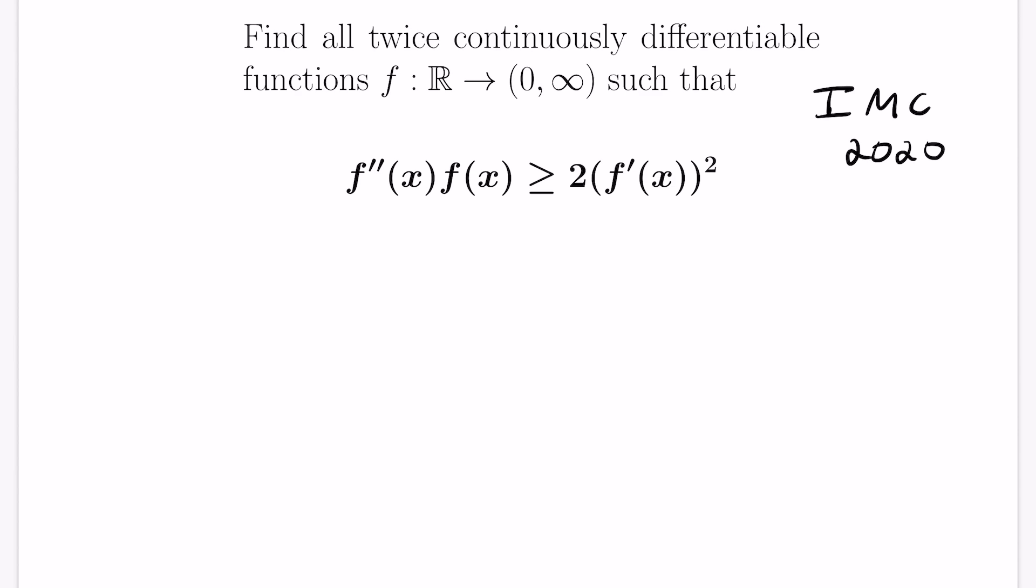First I want to rearrange the inequality for a bit. So I'm going to rearrange it to be f''(x)f(x) minus 2(f'(x))² is greater than or equal to 0. And the question is, where can something like this possibly pop up? We have here the second derivative of f multiplied by f, and then we have the first derivative multiplied by itself.